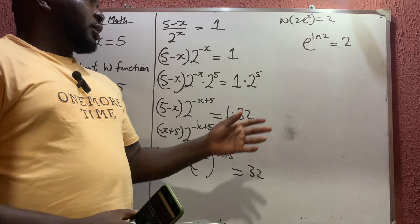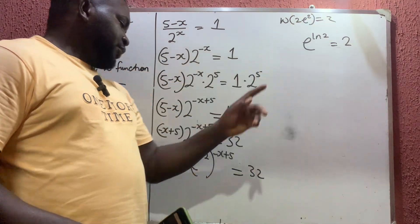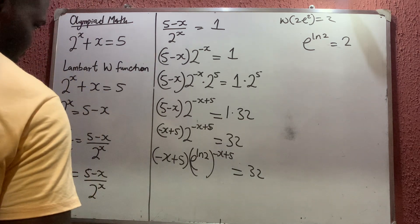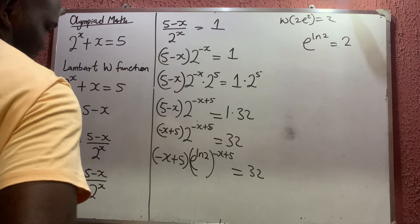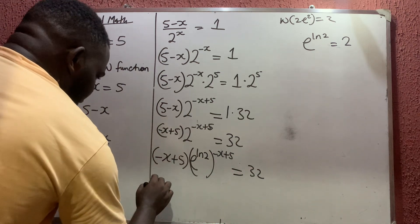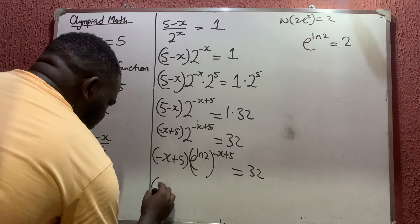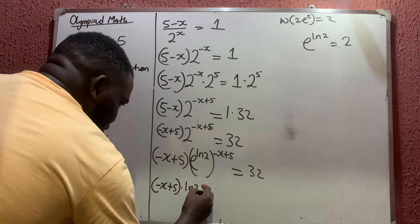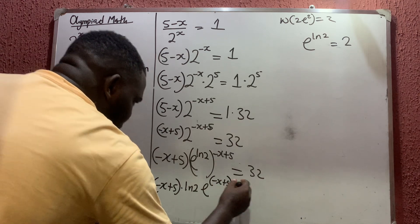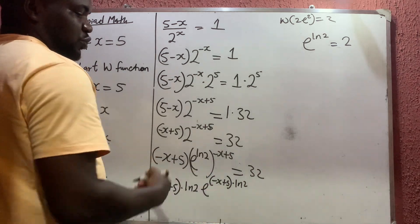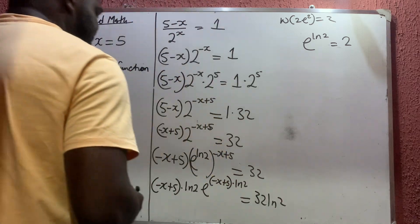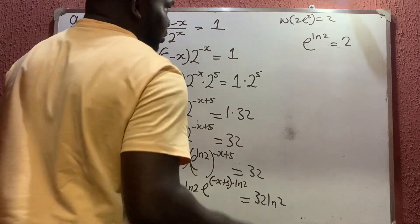Now using the Lambert W function: anything outside should go up here. The only problem is ln(2), so let me multiply both sides by ln(2). I'm having (negative x plus 5) times ln(2), multiplied by the exponential of (negative x plus 5) times ln(2). According to indices, powers multiplying each other gives us ln(2) times 32, which equals 32·ln(2).